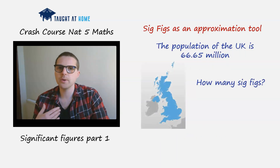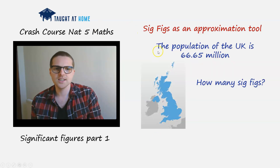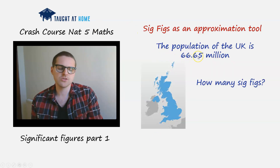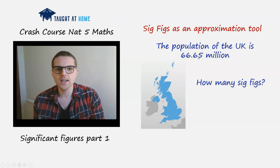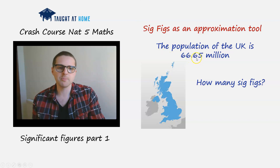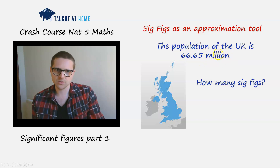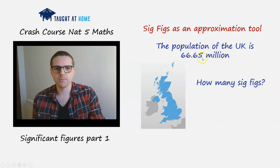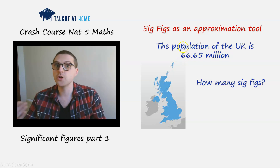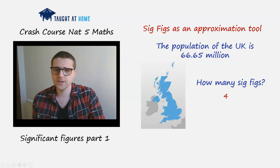Let's take the population of the UK. We say there are 66,650,000. How many significant figures are in this number? Straight away we can see there are four non-zero digits. The trailing zeros represent the number of places before the decimal point. So there are four significant figures in this number.